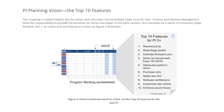Product and solution management have the responsibility to provide the direction for these next steps in the SAFe context. This translates to a series of incremental steps forward — one PI at a time, one feature at a time. As this picture explains, we need to build a program backlog.